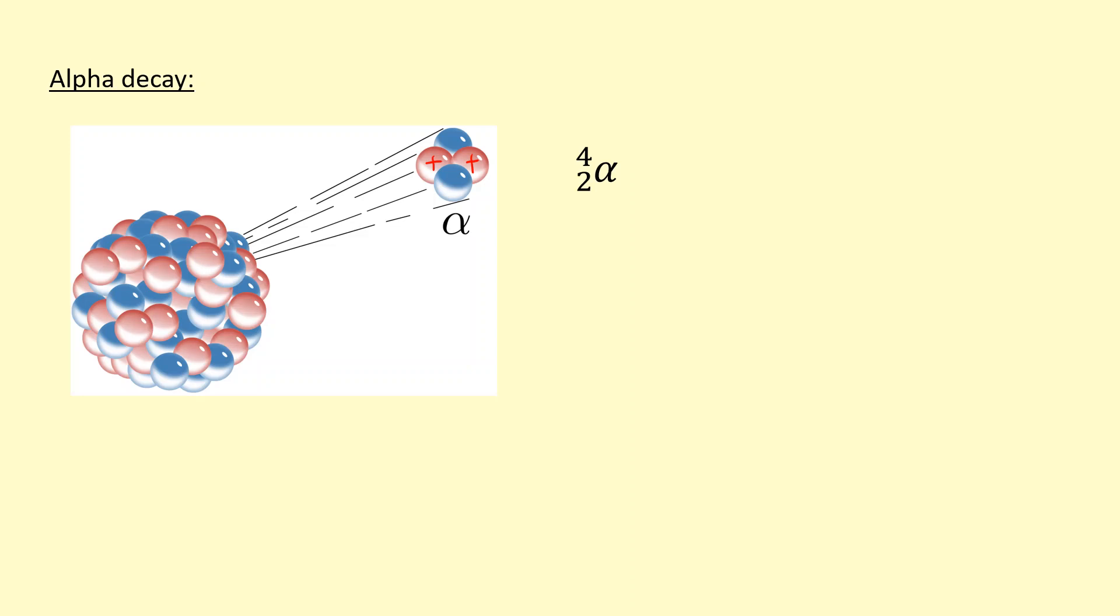When this gets ejected, let's see what happens, for example with thorium. You can see thorium's proton number has gone down by two and its mass number has gone down by four. The top numbers on the left-hand side and right-hand side need to be the same.